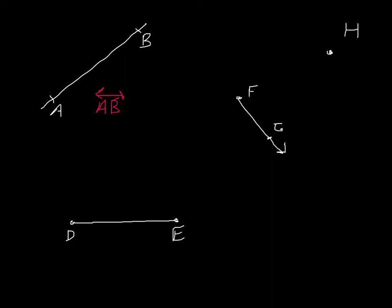Below that we have points C, D, and E. DE is a line segment. To identify it as a line segment, we put a line above it with no arrows and write DE. Over here we have one end point and a line continuing, so we have a ray. This is ray FG. For a ray, we draw a line with one arrow at the end and write FG — that identifies it as ray FG.